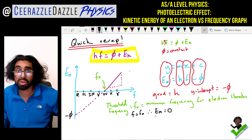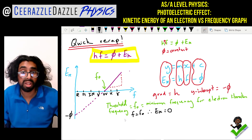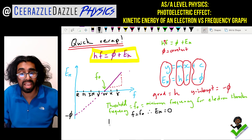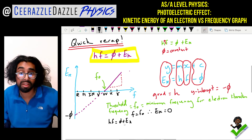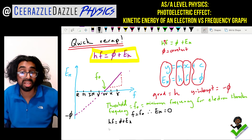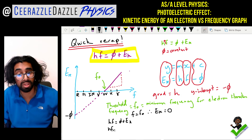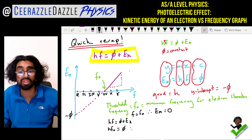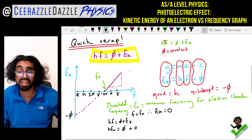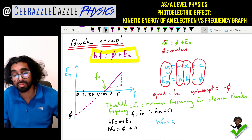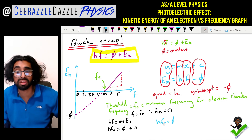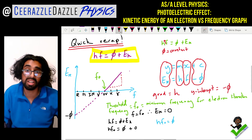We can plug this into our formula. We know HF is equal to phi plus Ek. When f equals f-naught, we replace f with f-naught; the kinetic energy is zero, so we get HF-naught equals phi plus zero. This gives us the expression HF-naught is equal to phi — Planck's constant times the threshold frequency equals the work function.